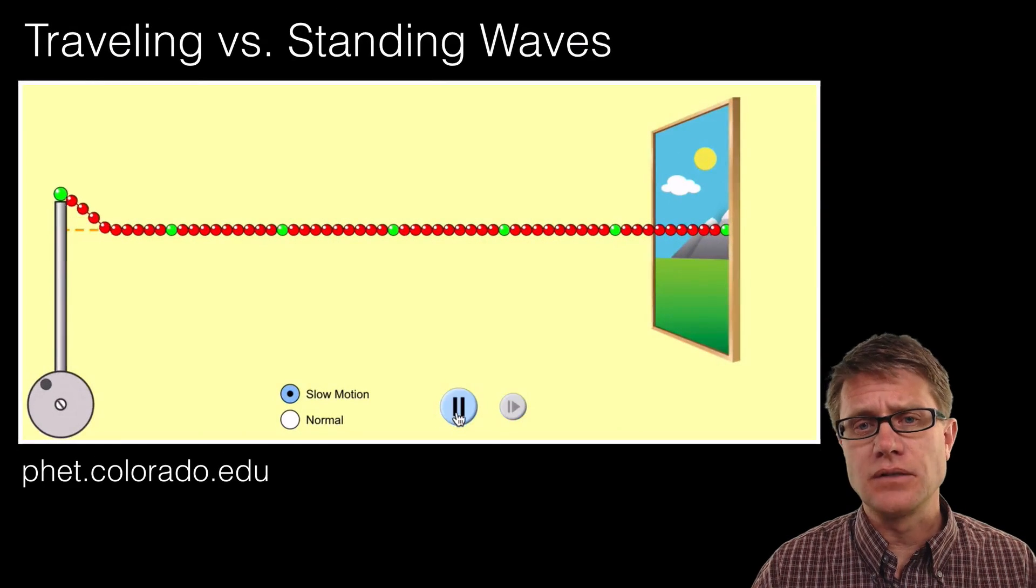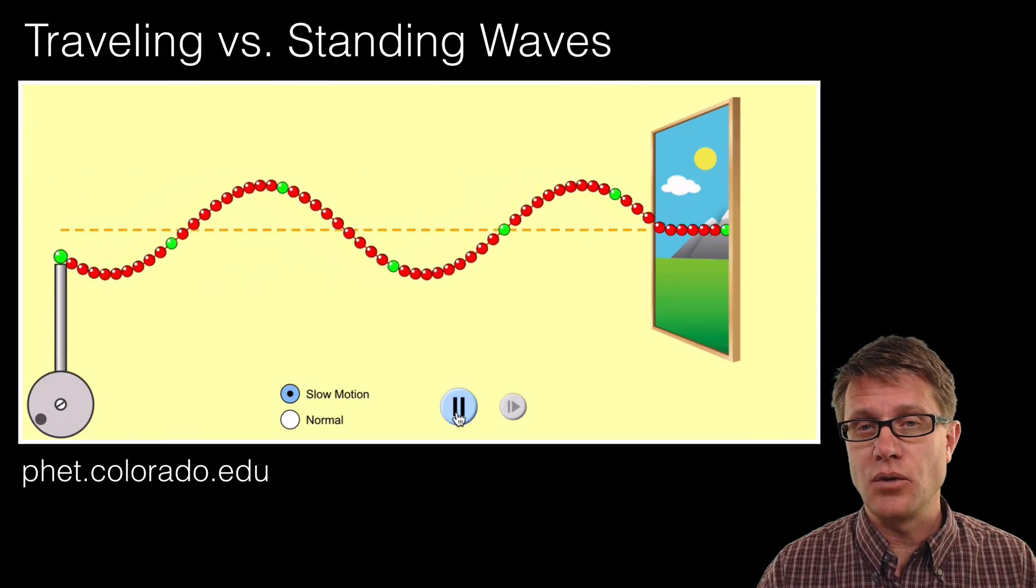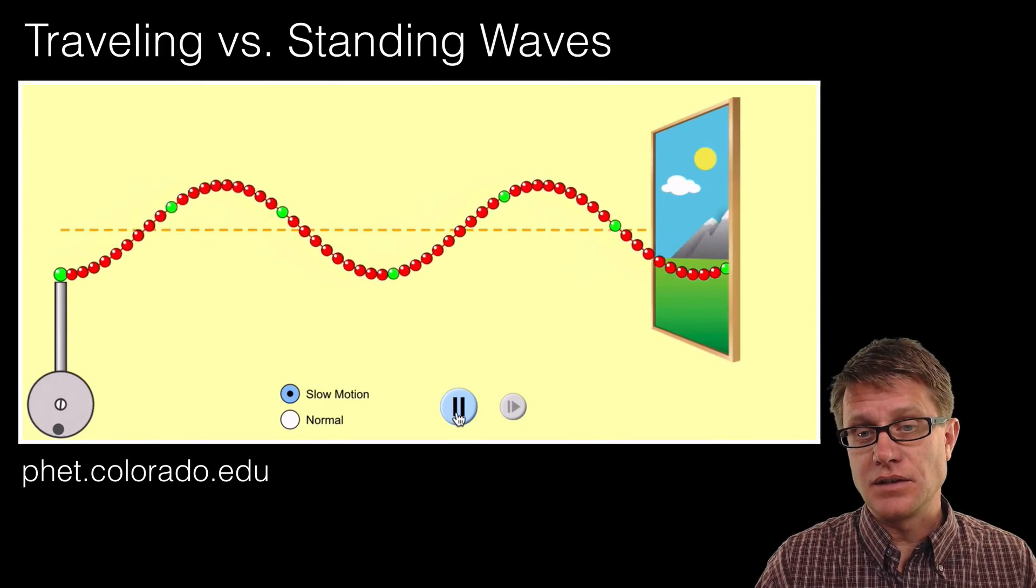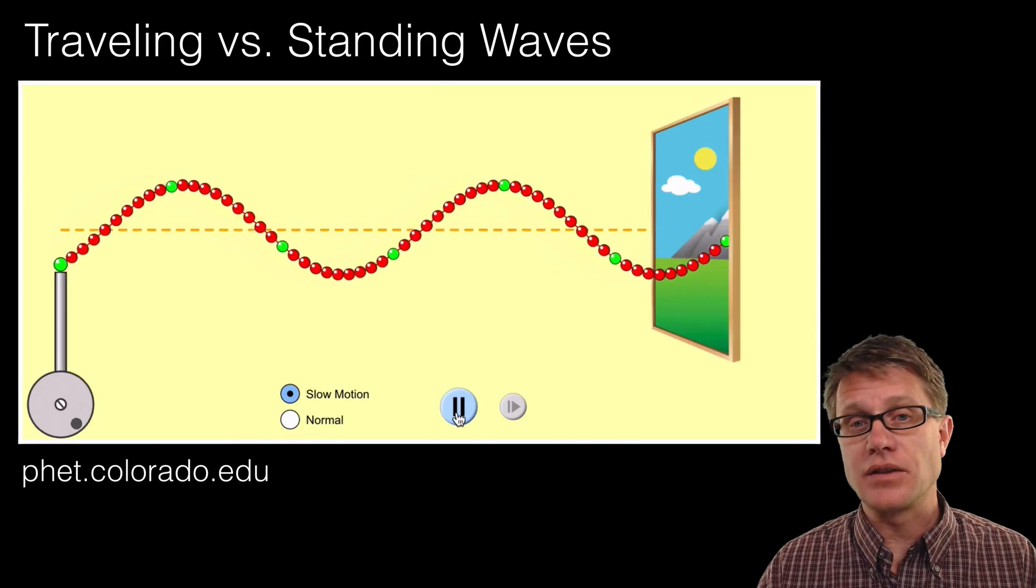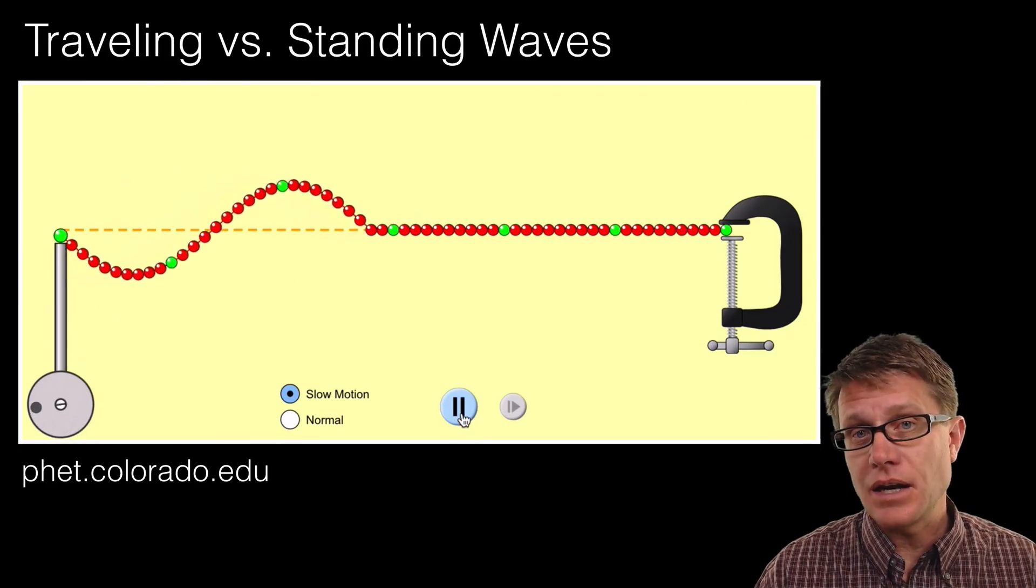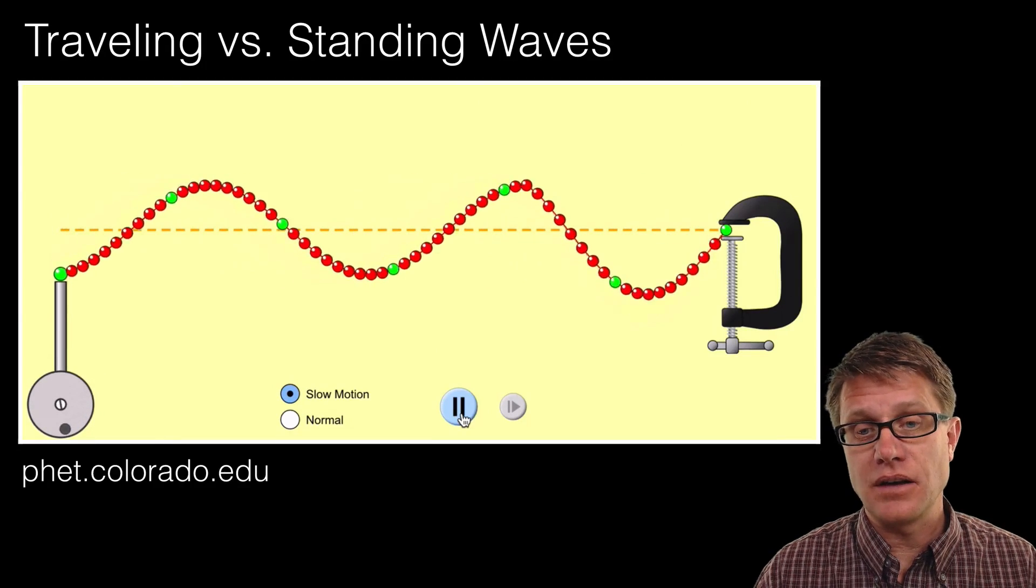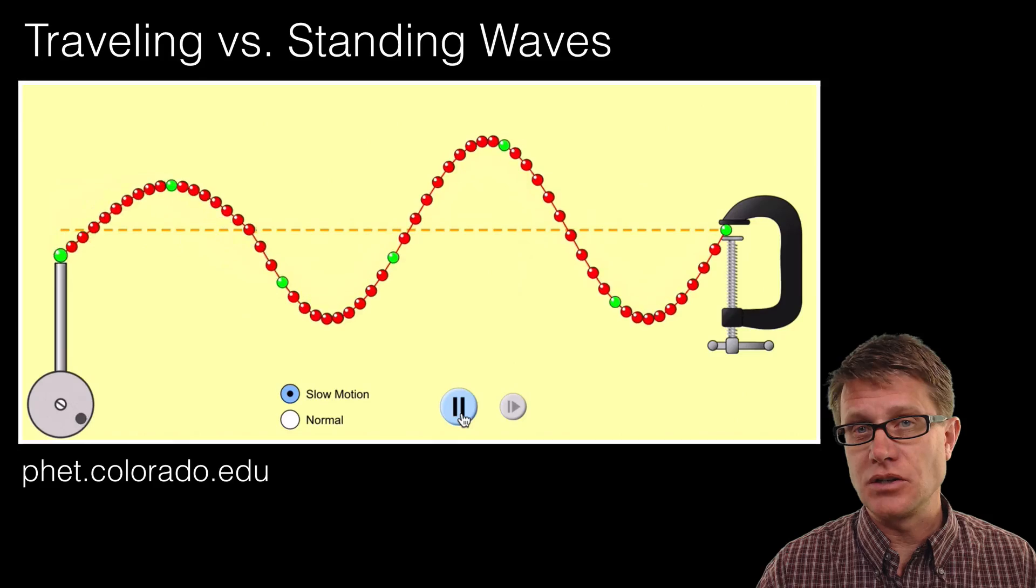So let us start with traveling versus standing waves. And so this PHET simulation, I am generating some waves. Those waves, and this is just kind of theoretical, are moving out the door. And then they have moved on forever. But if we add a boundary on the other side, in other words if we add a fixed boundary, you can see now there is a reflection back. So those waves did not just keep going. They bounced back.